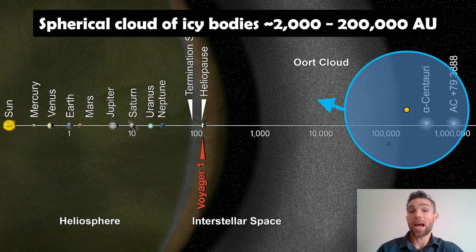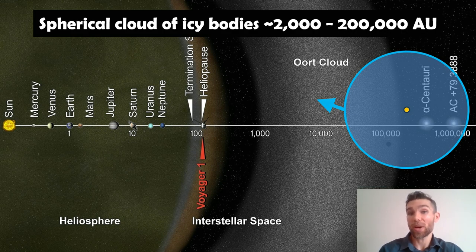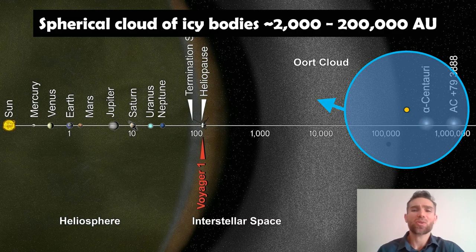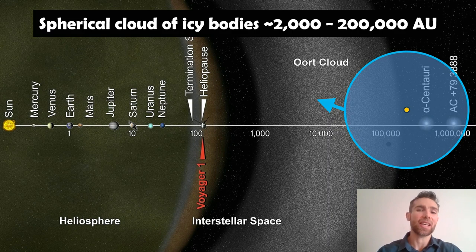So in our solar system, the Oort cloud is a spherical cloud of icy objects or comets, and it exists right on the outer part of the Sun's gravitational influence. It extends about 2,000 to 200,000 AU where 1 AU is the average distance between the Earth and the Sun.